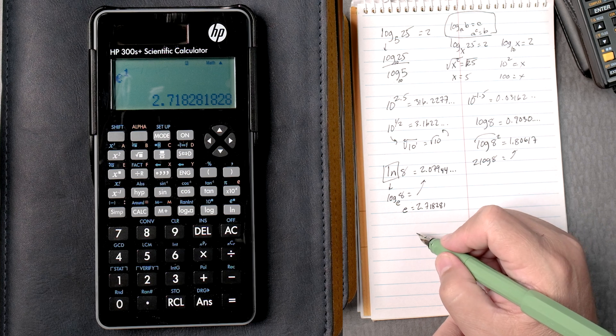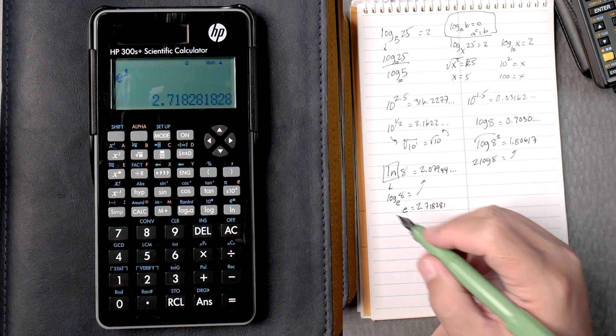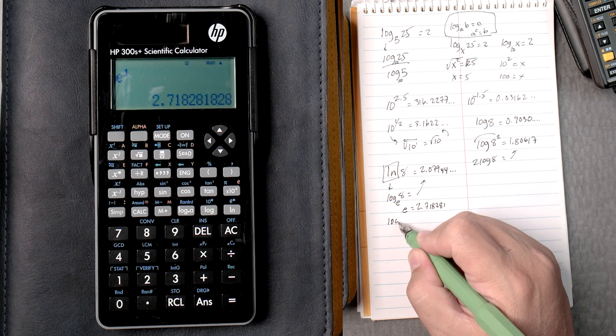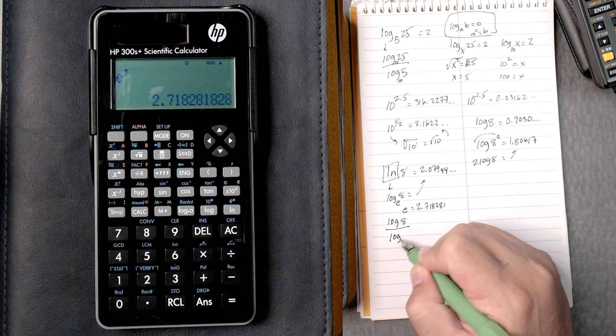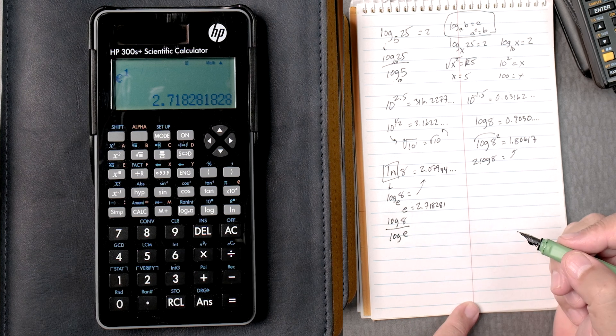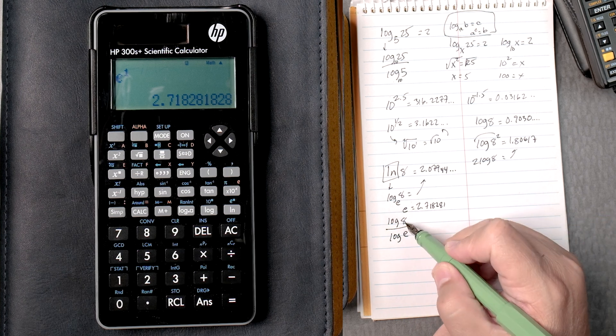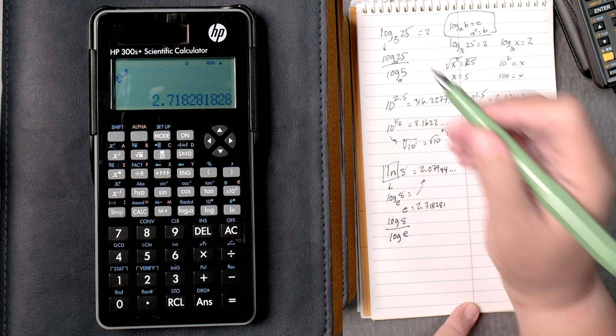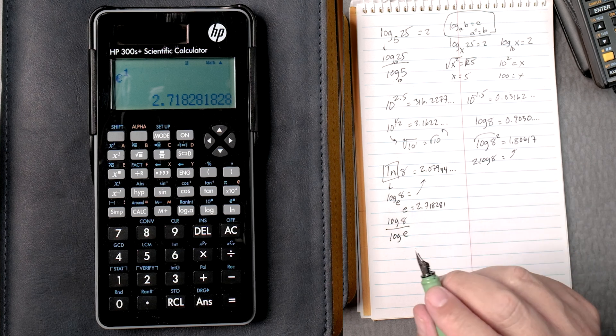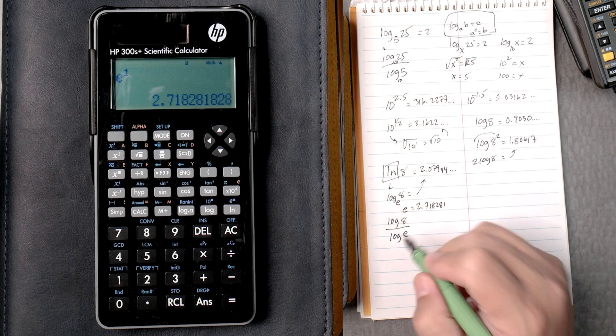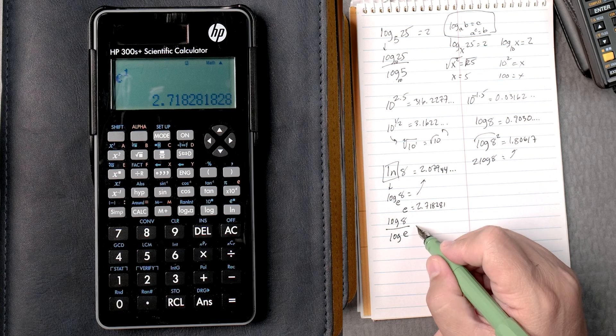Now, if that's the case, then we can say the log of 8 divided by the log of e. 8 is in the top, e is in the bottom, just like this. And actually, we can probably do it another way on this calculator. But let's do it this way first.